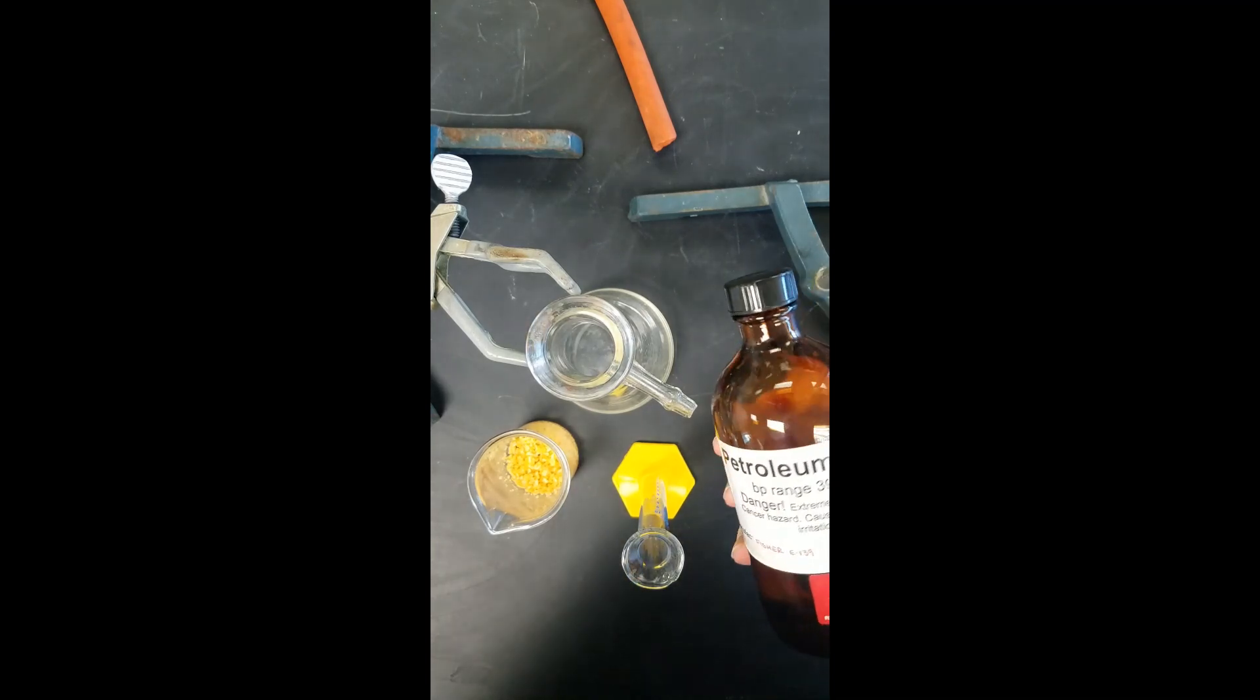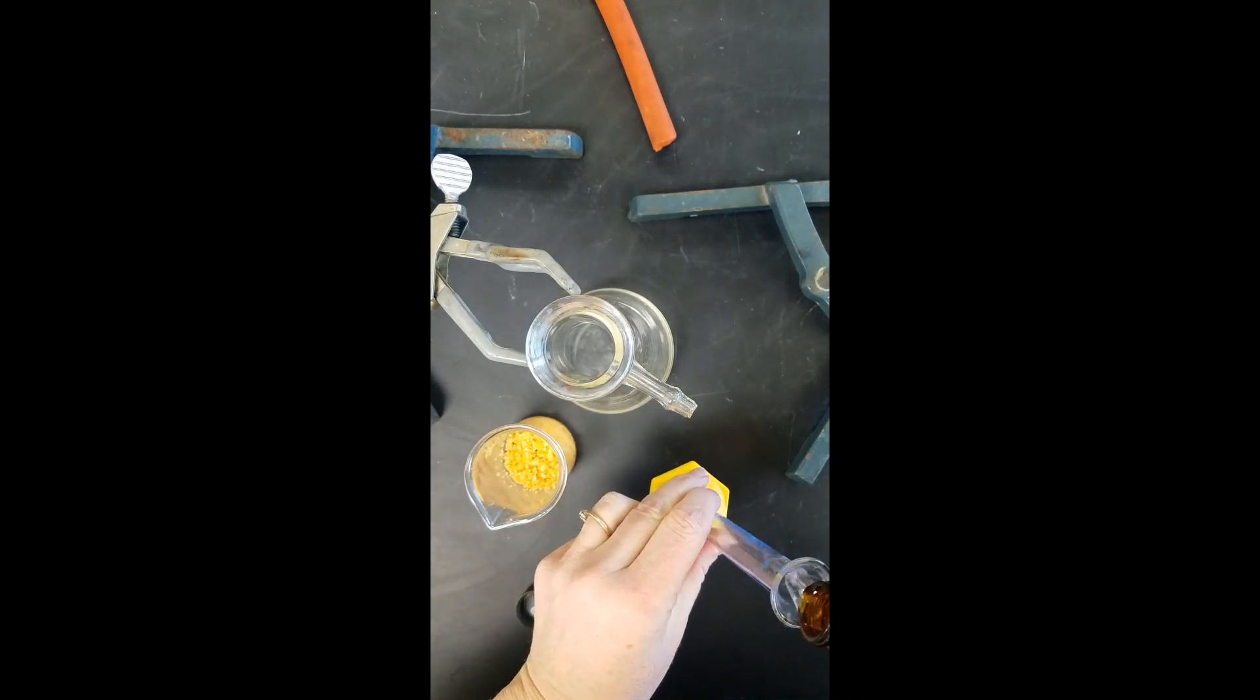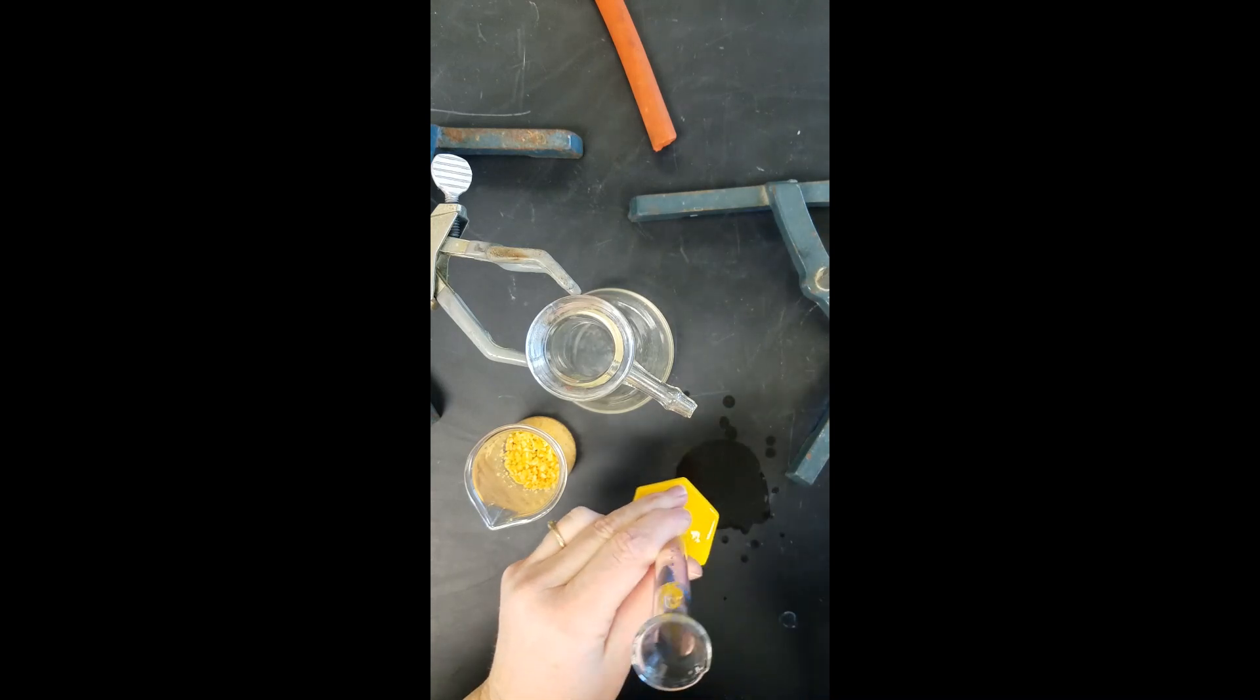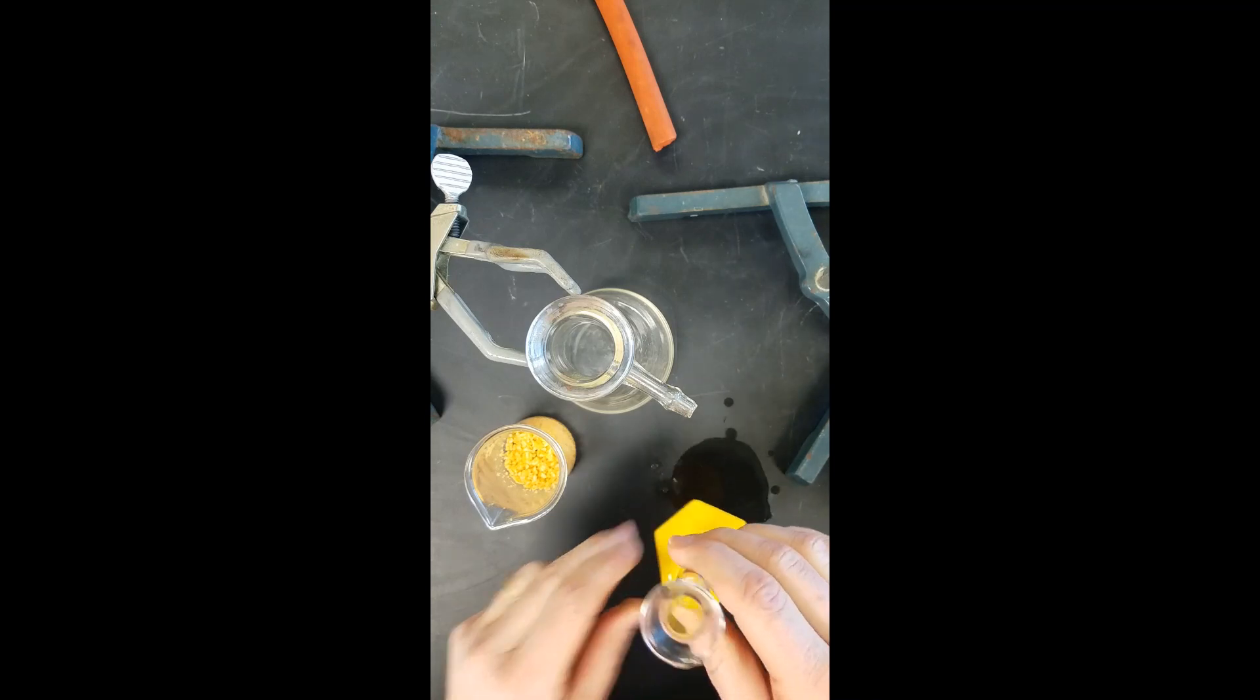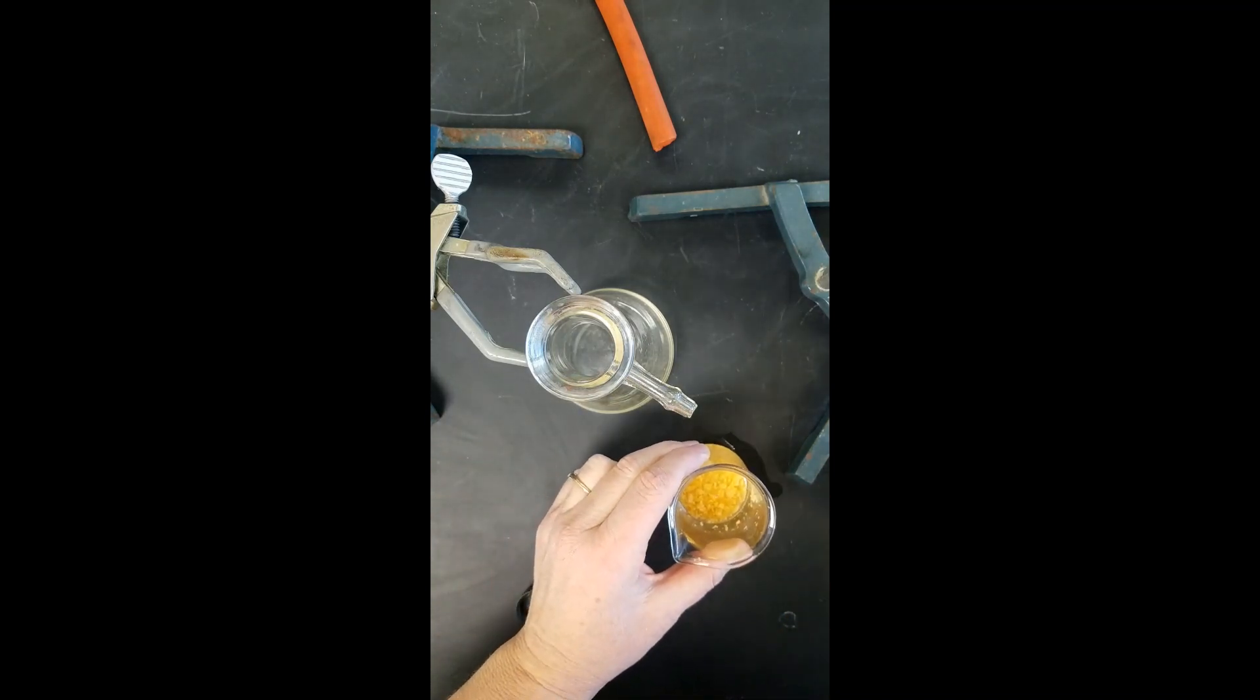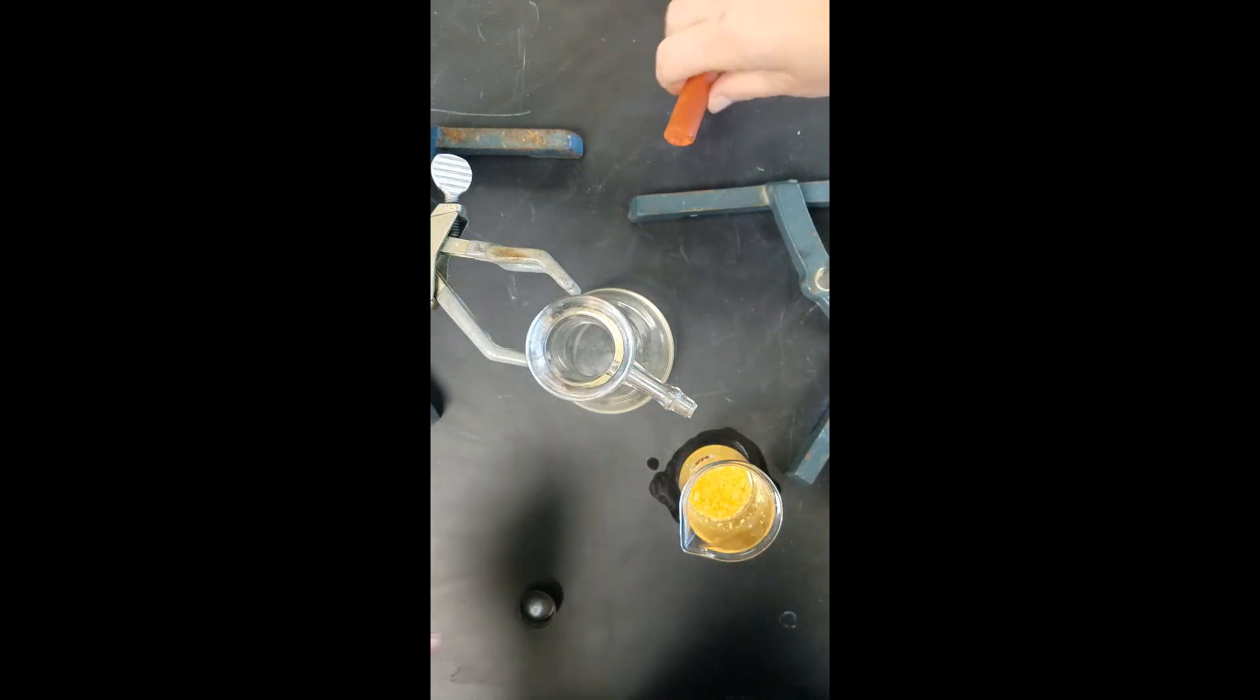We are now going to add 10 milliliters of petroleum ether. Again this volume doesn't have to be exact. I'm going to measure out about 10 milliliters and add it to the chips. We're going to mix this up for about one minute and we're also going to set up our apparatus.